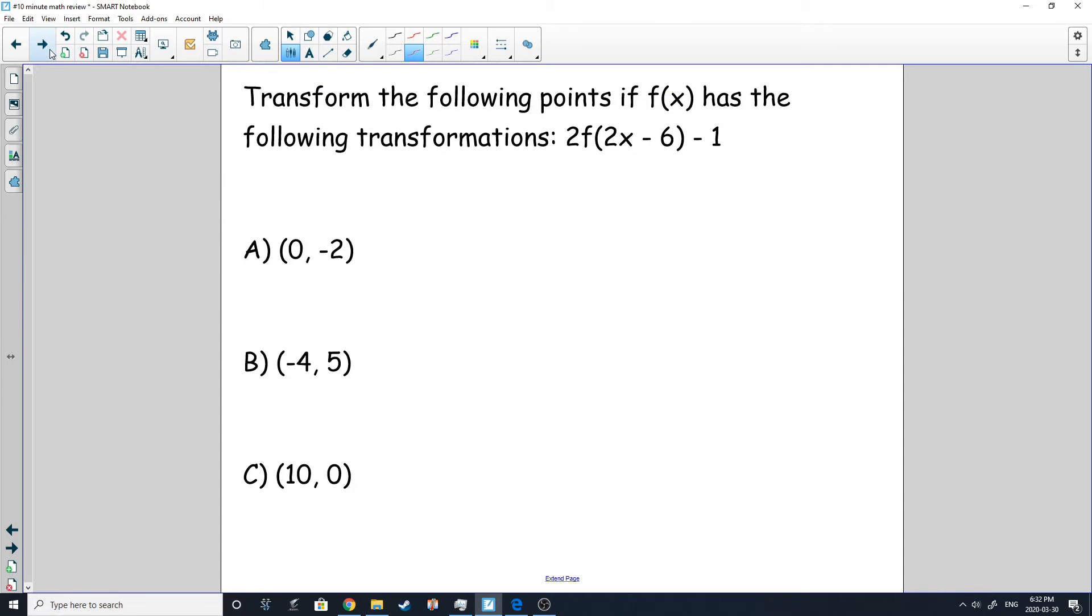Alright, so there it is for review. Now we are just going to do some questions. We're going to transform a couple of points here. So we got the original points on F of X and we have the following transformations happening. The first thing you're going to want to do is you're going to want to go ahead and pull the two out from the X because it's not positive one. So you pull the two out and that's going to give you X minus three like that, subtract one.